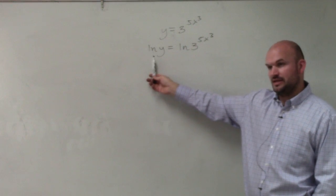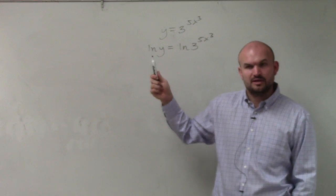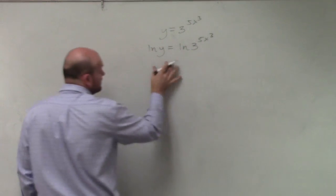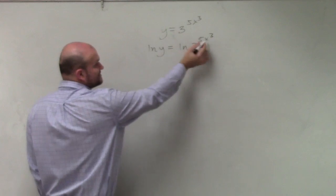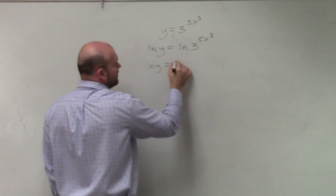So we could take the ln of both sides. And this is what I was explaining in the last class period. So just look at that as an option, because now I can take the derivative of this. I can bring this 5x³ down.